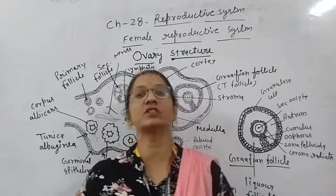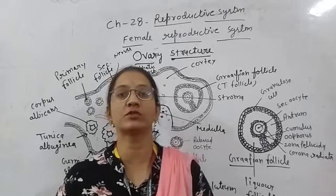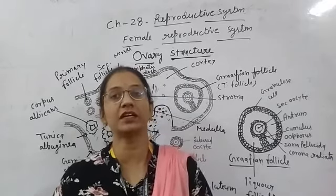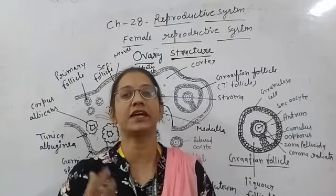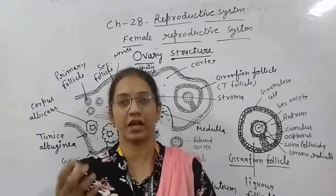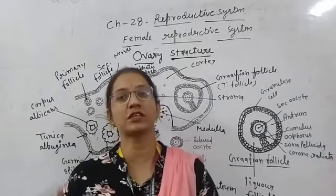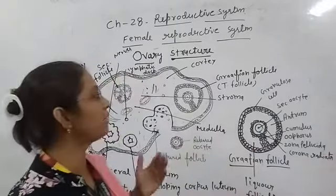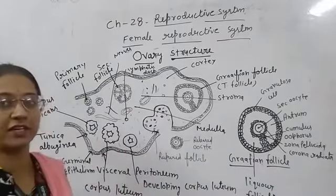Students, there are two ovaries. The internal structure of the ovary is a very dense structure. It is oval in shape and solid or dense. Here we have illustrated the internal structure of the ovary.